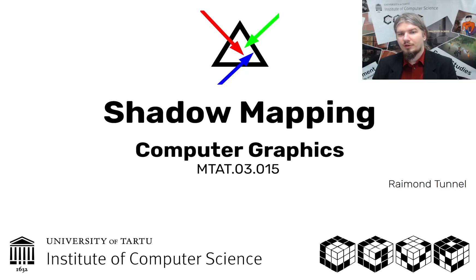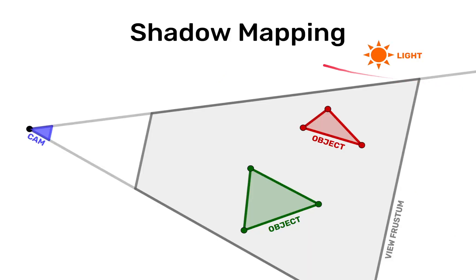Shadow mapping. Shadow mapping is a very popular technique used to create shadows in computer graphics for a couple of decades now. So let's see how shadow mapping works.